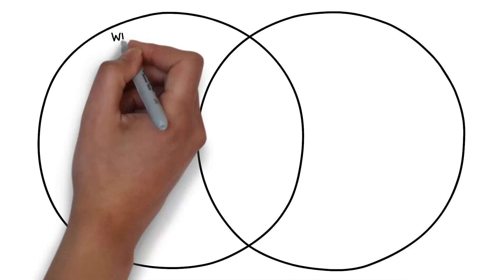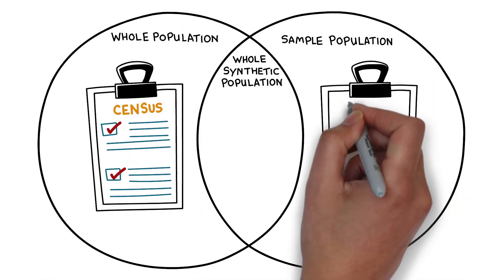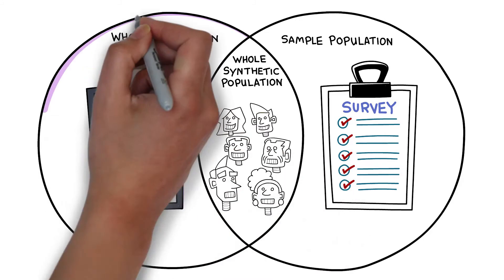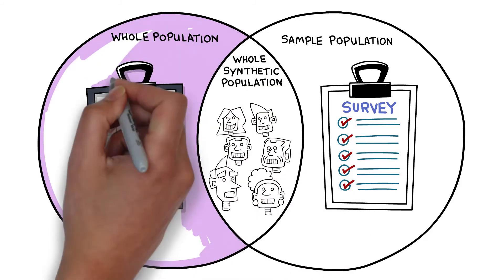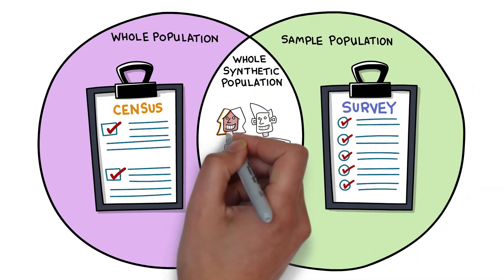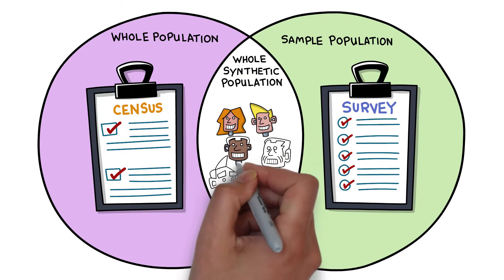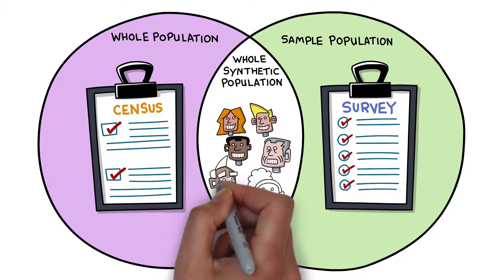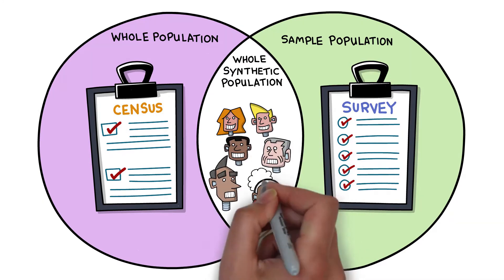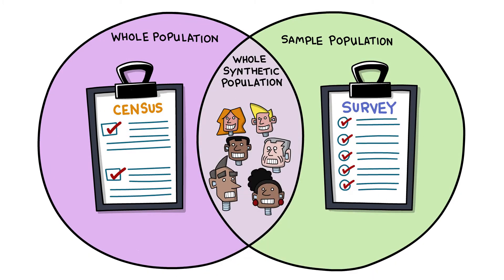The result is a dataset that combines the full geographical coverage seen in the census with the detail seen in survey data, and this allows us to better investigate geographical distributions, for example focusing on health or labour market inequalities. It's important to note that the people in the synthetic population aren't real people, but they represent the same characteristics as real people.